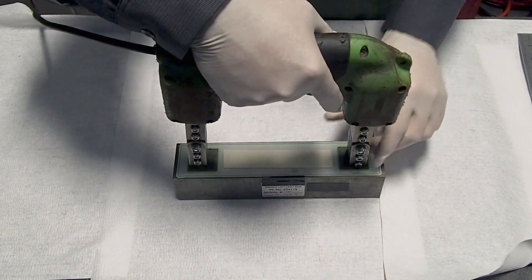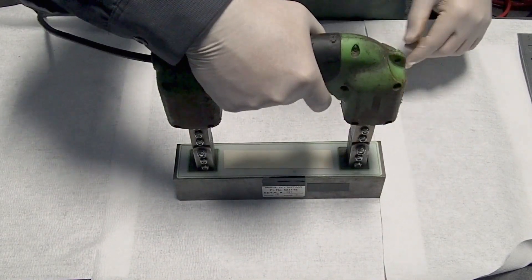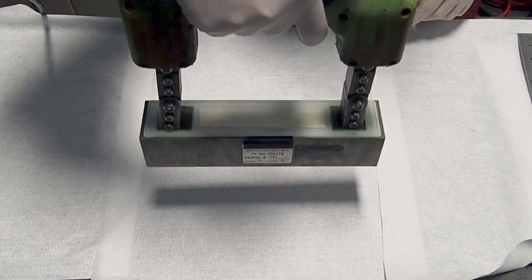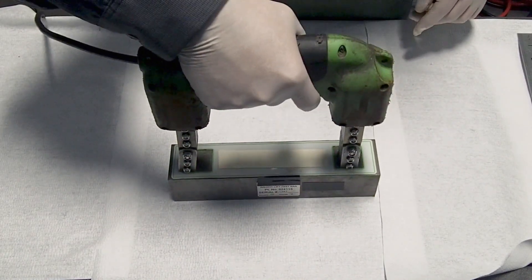To do the test we are going to put the yoke over the bar, we are going to activate and lift it. That's all, this is the test.